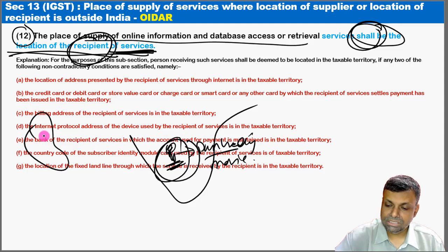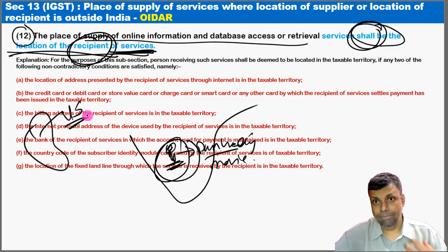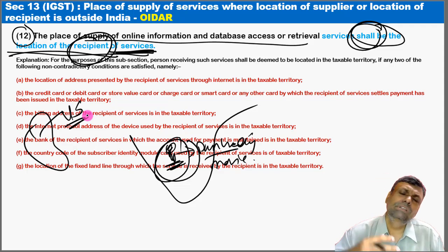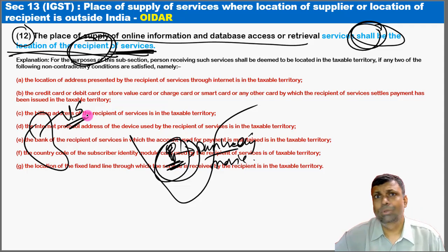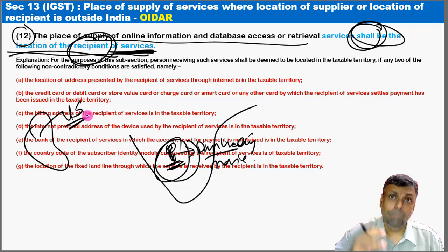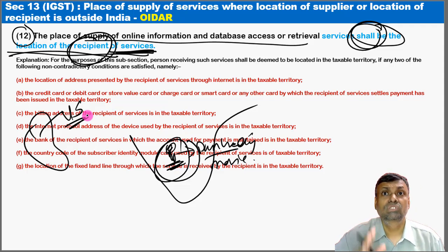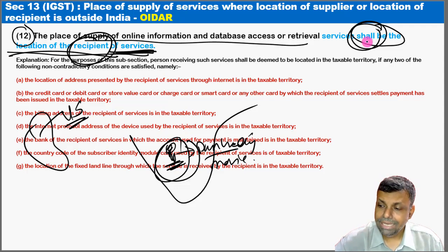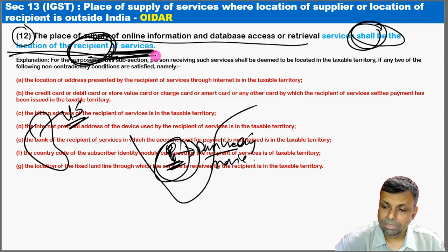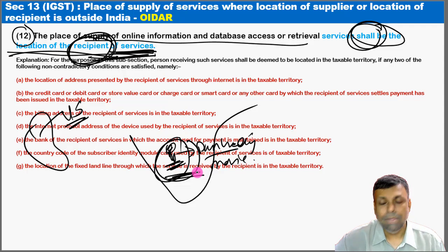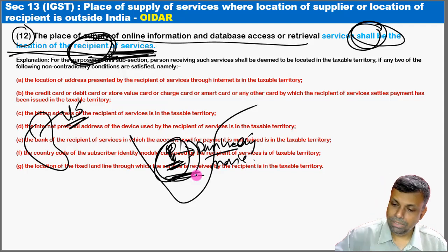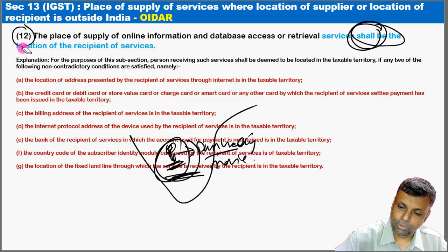The Netflix server can be anywhere in the world, but since the actual user is inside India, Indian law says you will be subjected to GST in India, because the place of supply of services is the location of the recipient. If Mr. X is inside India, the service is chargeable to tax in India. Next, Section 14 comes into picture.